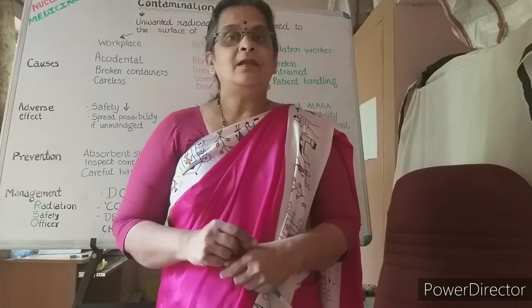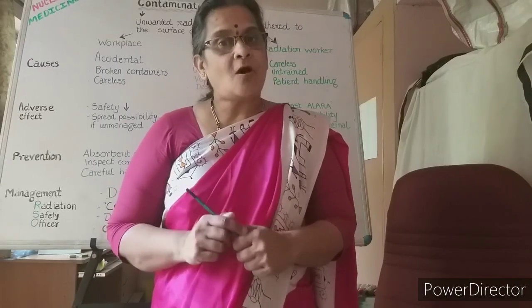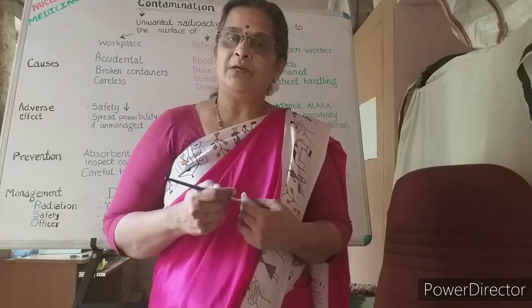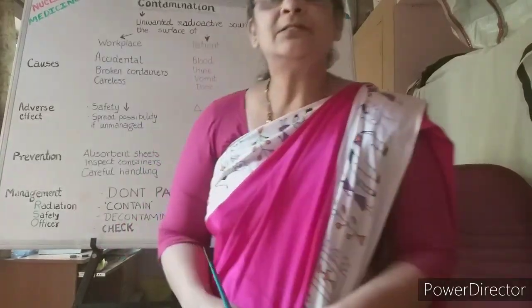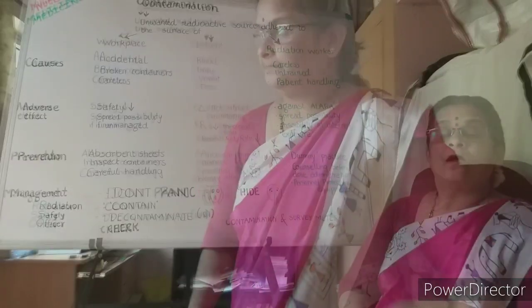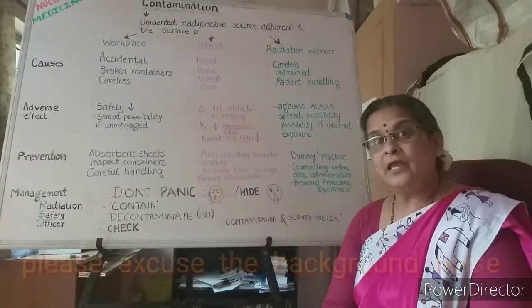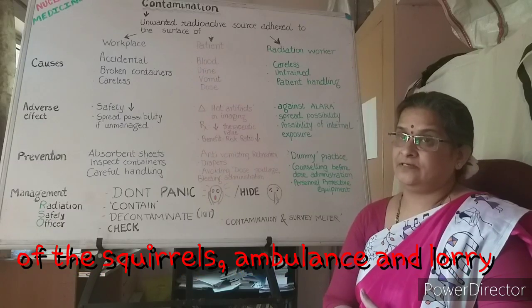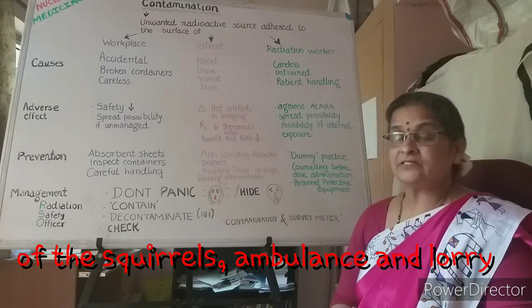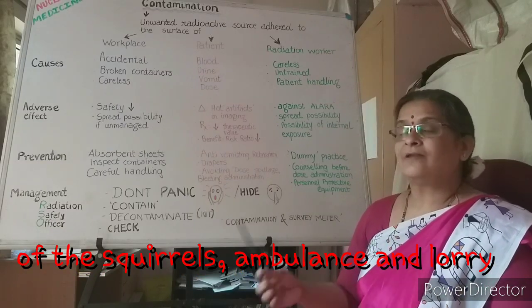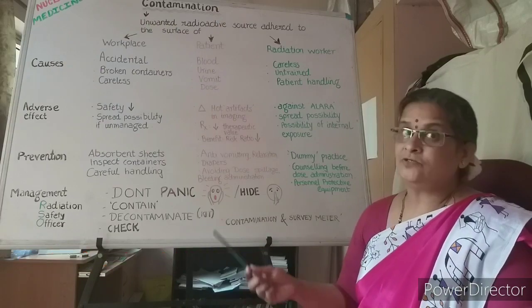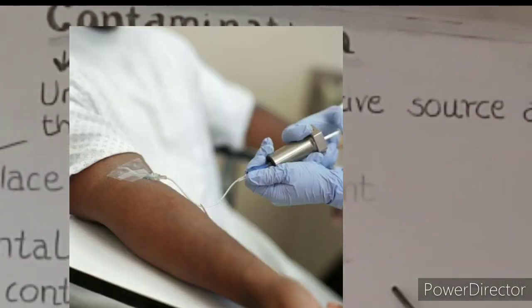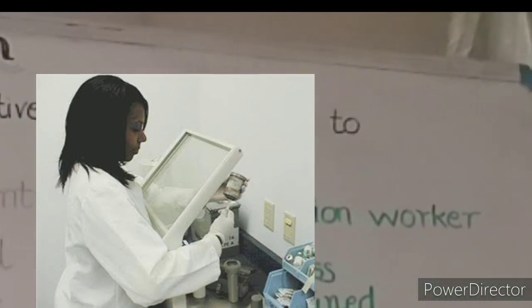Today's topic is cropped out of the question that I have asked you — that is contamination. Contamination in nuclear medicine is an unwanted radioactive source which gets adhered to the surface. These surfaces are classified into three types: the workplace, the patient, and the radiation worker.